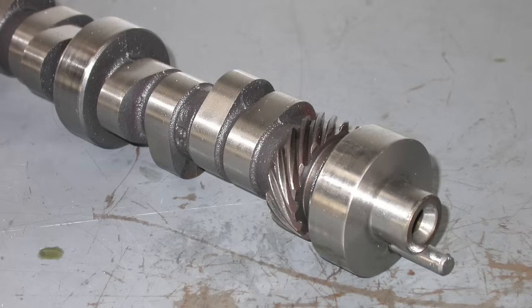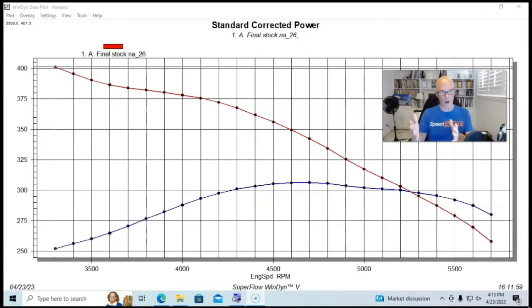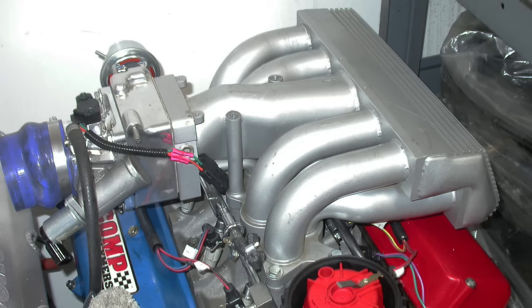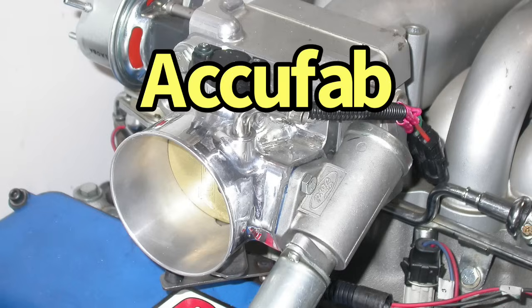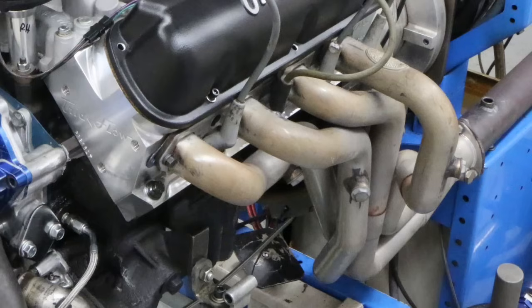We put a stock five liter HO camshaft on it. I didn't have the HO upper and lower at the time, so we put a GT40 tubular upper and lower intake manifold on it.